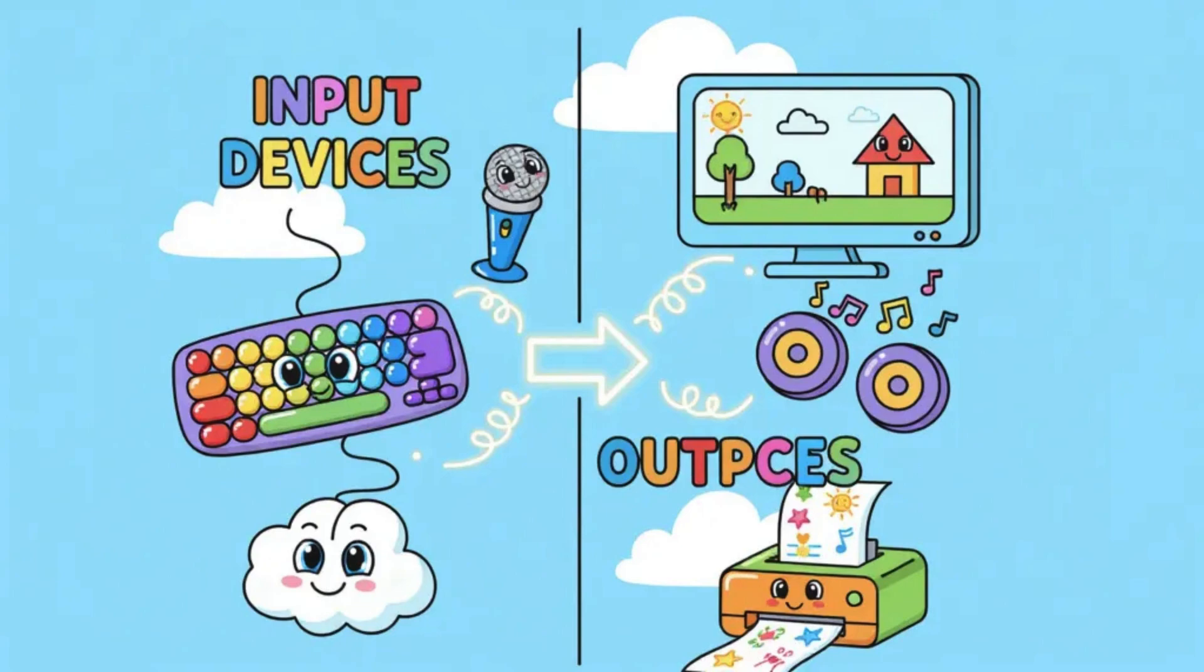And then we have the printer, which takes the digital information from the computer and produces a physical copy on paper, whether it is a text document, a photo, or a diagram. In this way, output devices are like the mouth and the eyes of the computer, because they are the way the computer communicates with us and shows us the results of our actions.